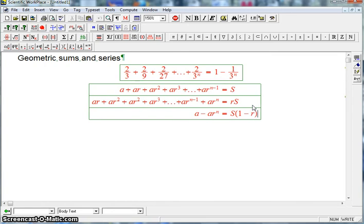So that's A minus AR to the N on the left hand side equals S times the quantity 1 minus R. And so we get a formula for the sum. Beautiful, super important thing. The A comes out as a common factor. 1 minus R to the N over 1 minus R.